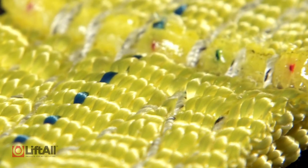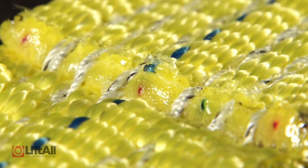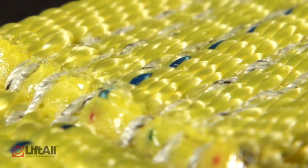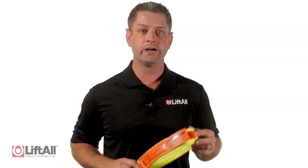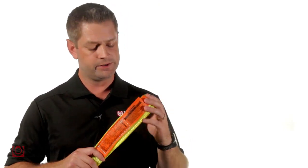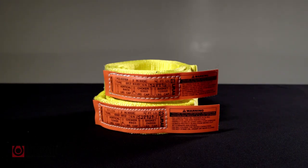It promotes safety with a red core yarn warning system that aids in identifying sling damage during your inspections. The yellow treatment provides abrasion resistance for extended sling life. With a great value versus strength ratio, this sling is a go-to solution for almost any industry.